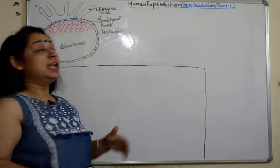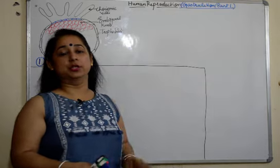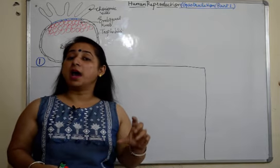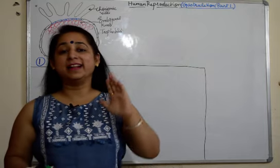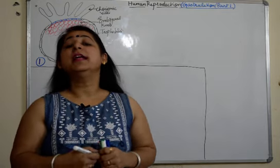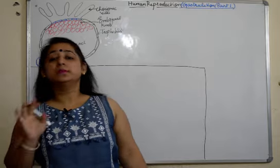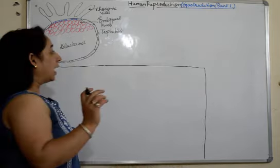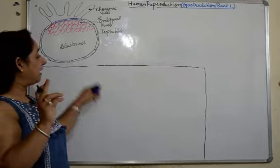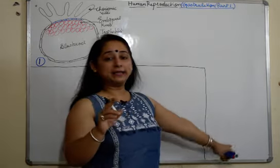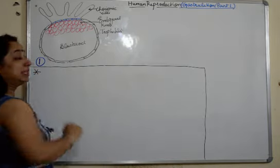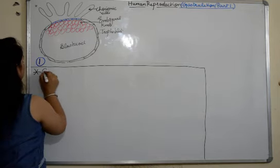After implantation, the next process will start — that is gastrulation. In this video we will talk up to primitive streak formation, which marks the onset of gastrulation. In our next video we'll discuss the formation of the three germ layers. I have divided the board into two parts: one for diagrams and one for notes.